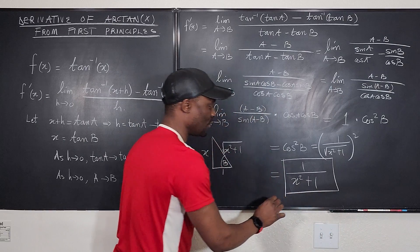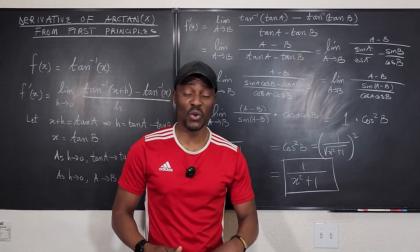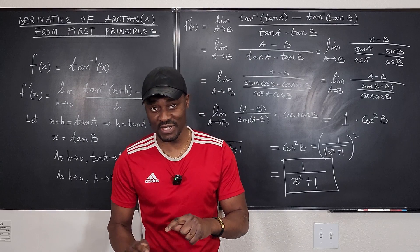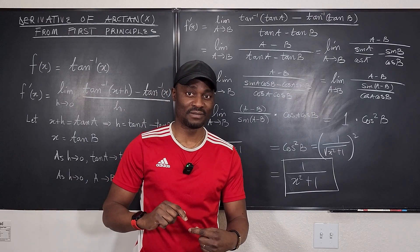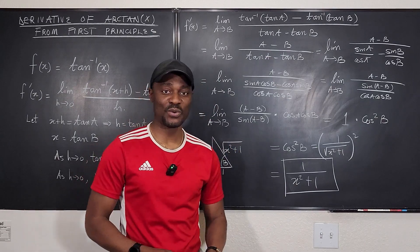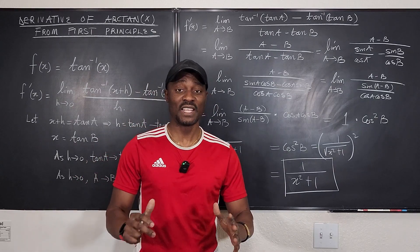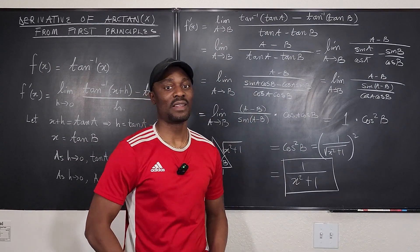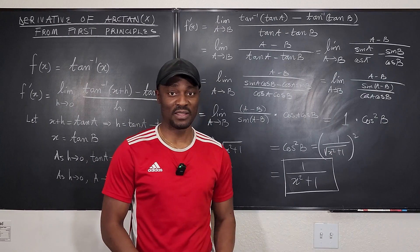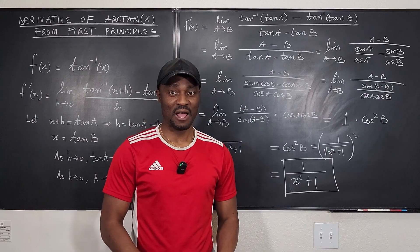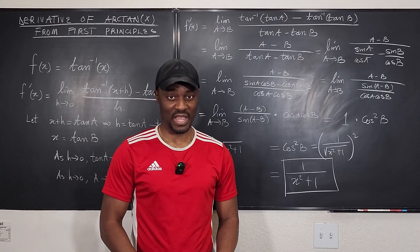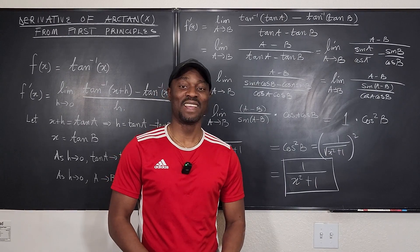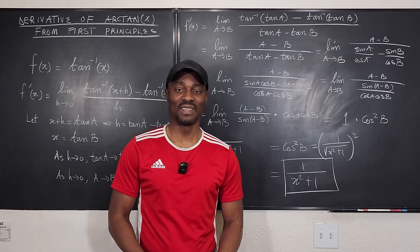This is how to show from first principles, using the definition of the derivative, that the derivative of arctan(x) is equal to 1 over x squared plus 1. In Calculus 2, this is something you will rely on heavily because many problems require this anti-derivative. Never stop learning, because those who stop learning have stopped living.